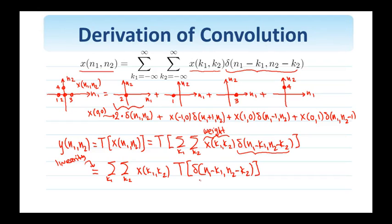And now recall, we called the response of the system to a delta the impulse response, we denoted by h. And now, since the system is spatially invariant and the input is shifted, the delta is shifted, the output h is going to be shifted by the same amount. So the output will be shifted by k1, k2. So this is the superposition sum, the convolution, the two-dimensional convolution of x with h.